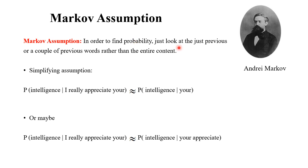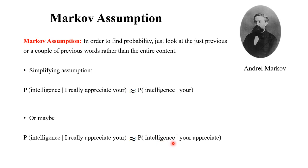In order to find probability, we look at just the previous or a couple of previous words rather than the entire context. For example, we already have 'I appreciate here' and the next word is 'intelligence.' Rather than conditioning on the entire previous sequence, we approximate: probability of 'intelligence' given just the previous word 'here.' We can also consider the previous N number of words.